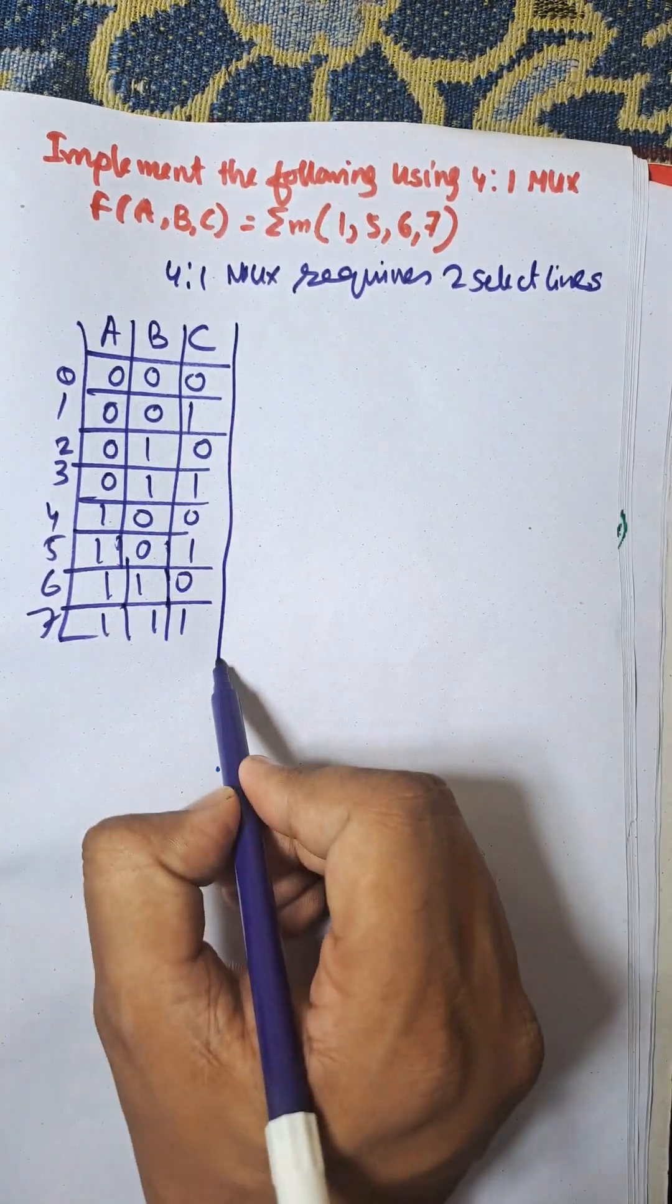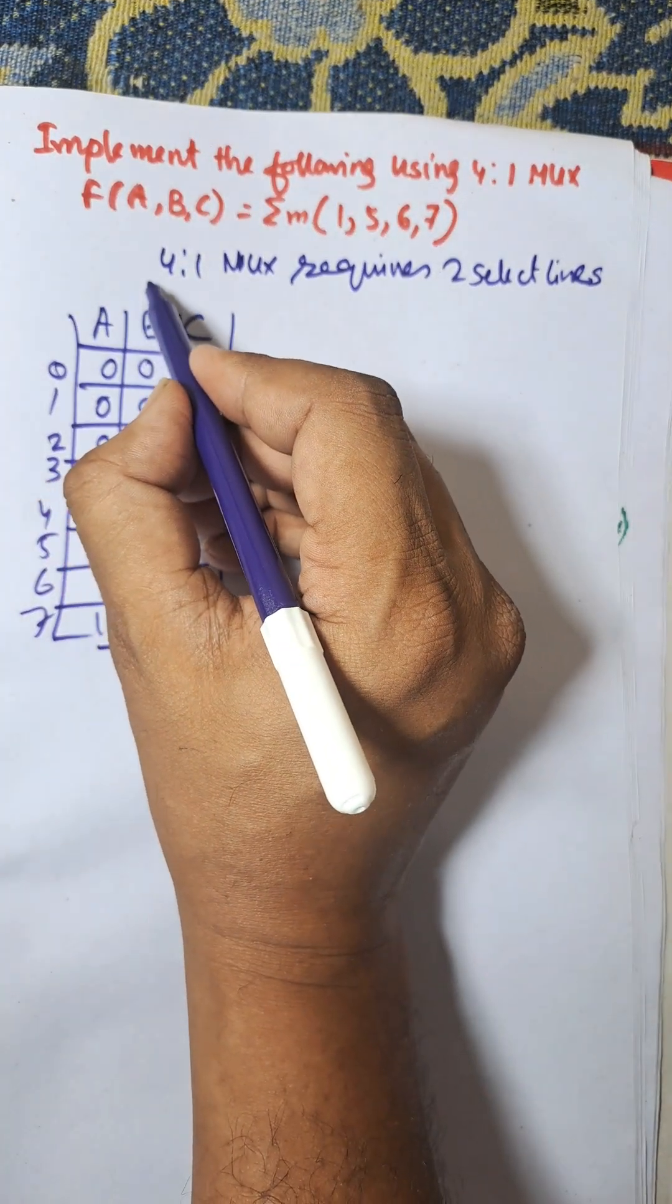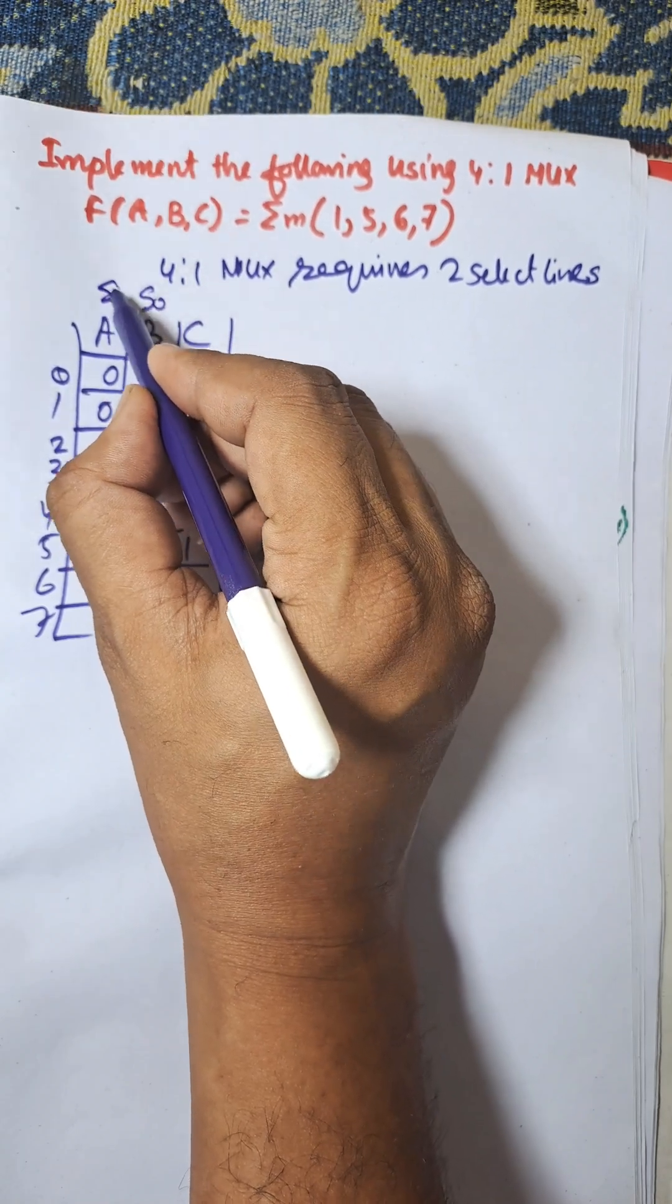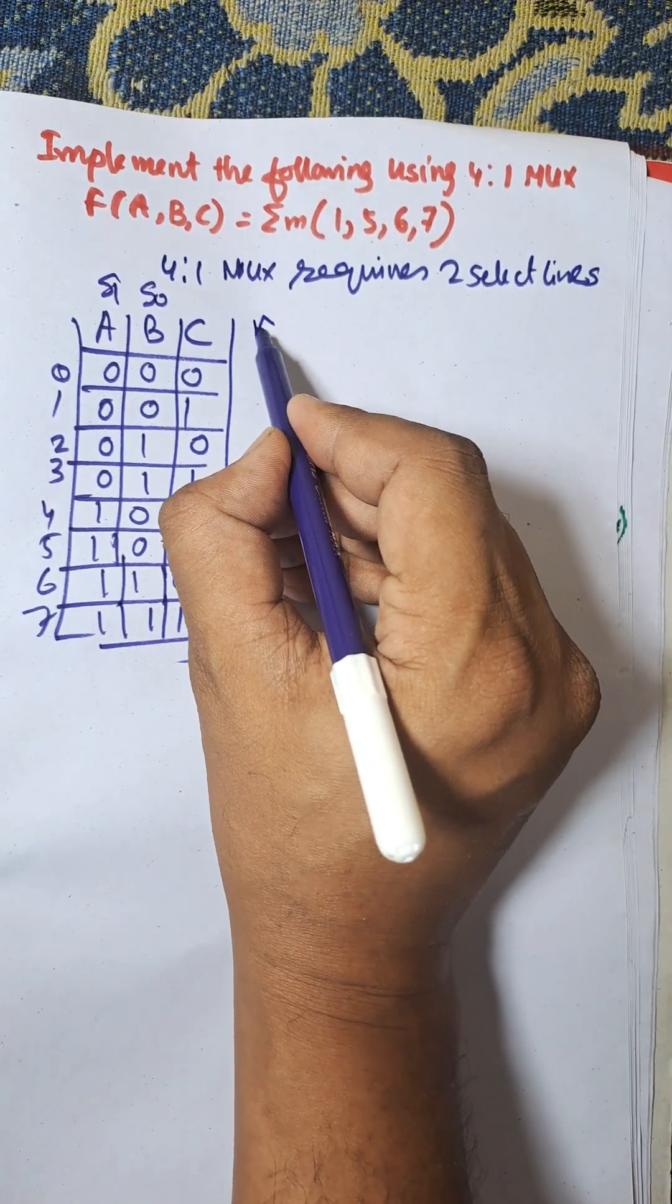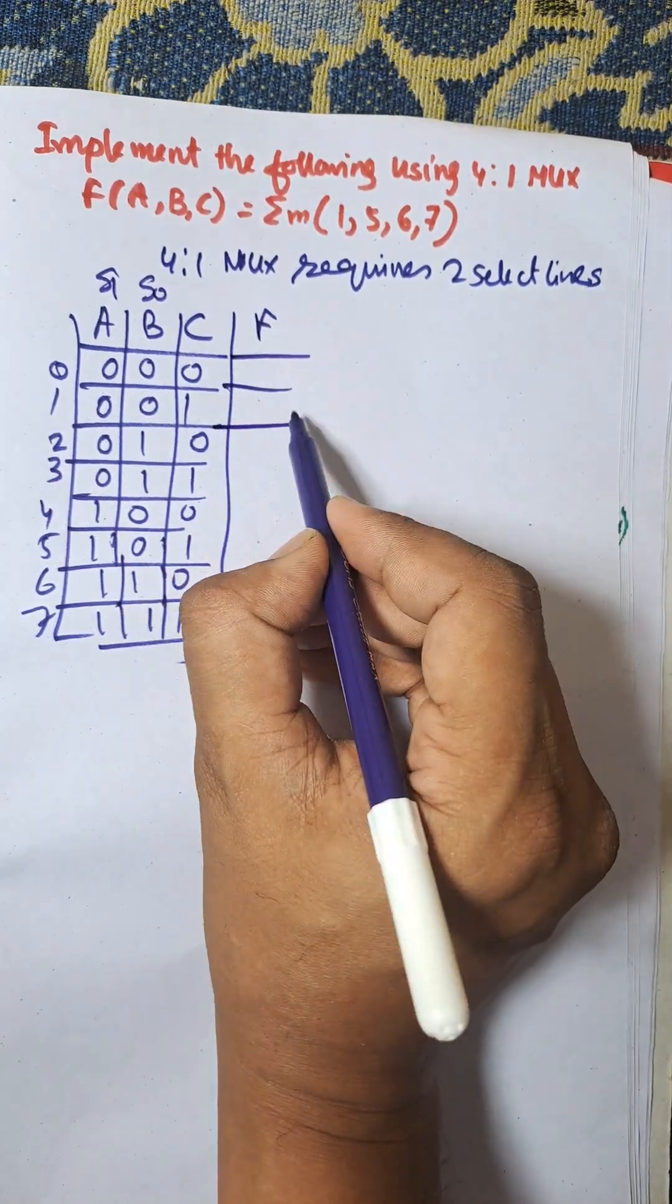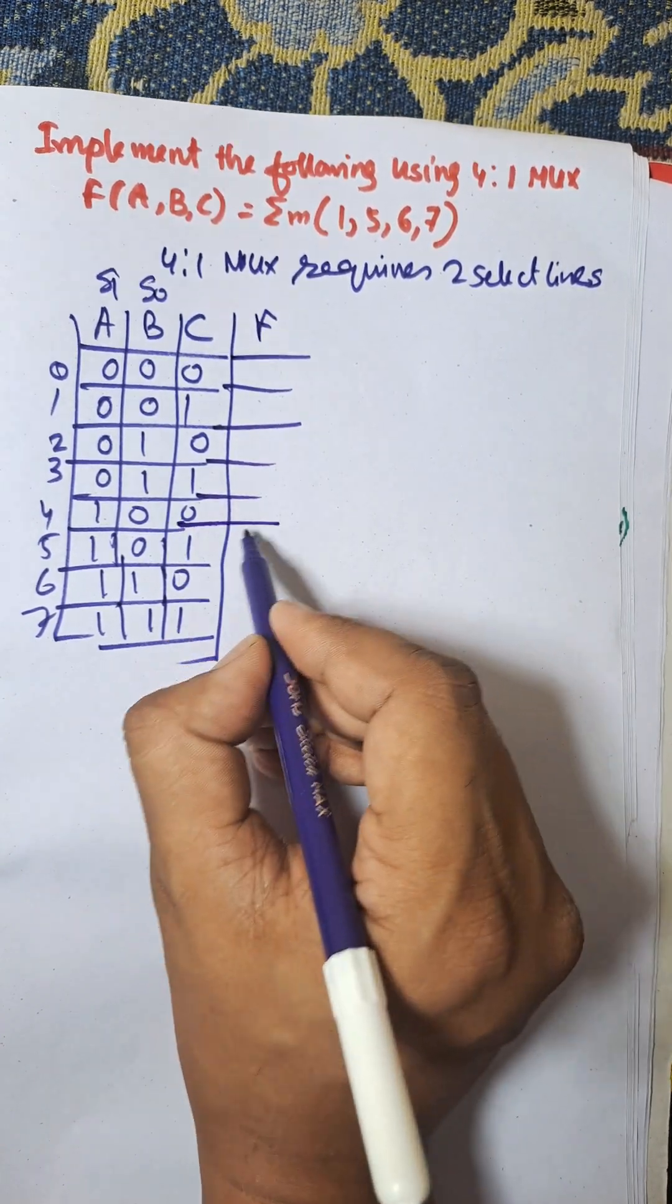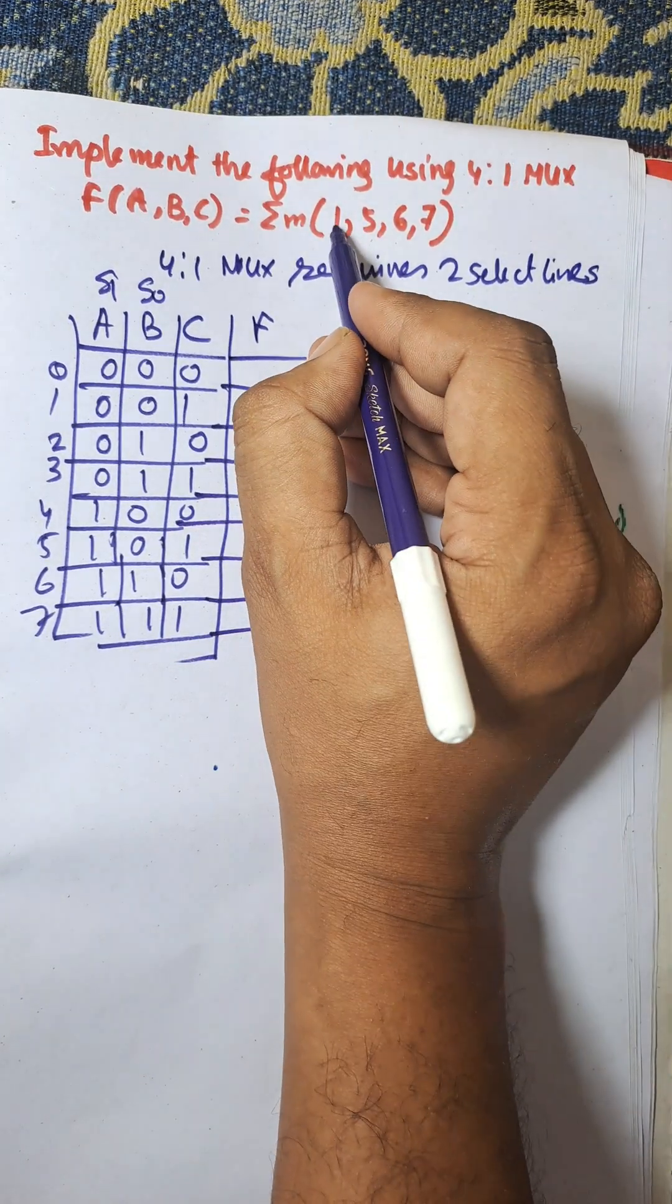Consider A and B as select lines. This is S0, this is S1, and this is the output function F. We need to put the values of F here: 1, 5, 6, 7.